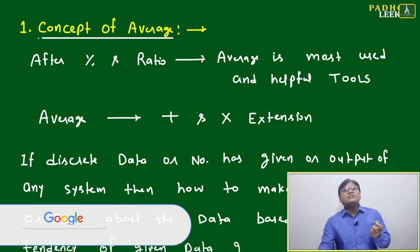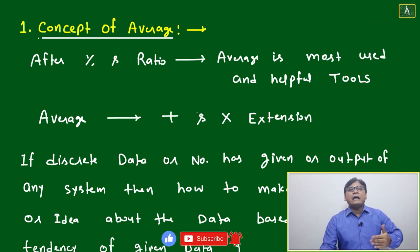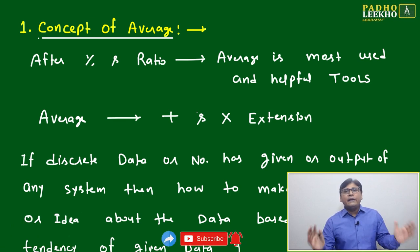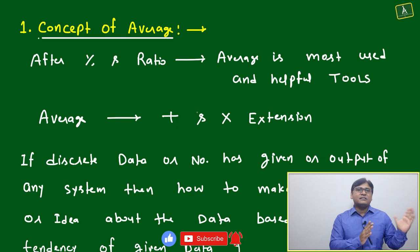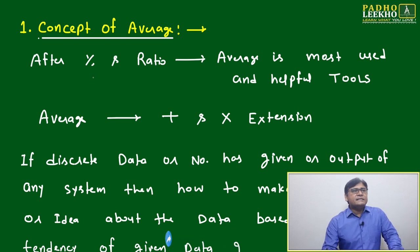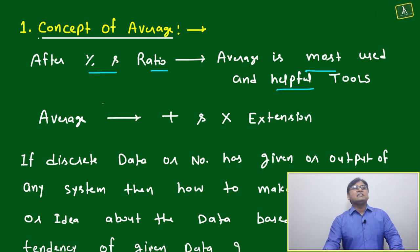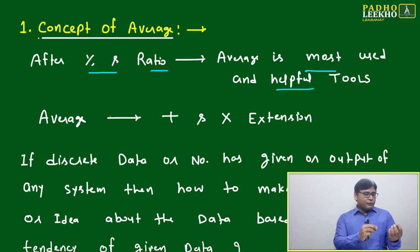The goal is to measure one central point or central line, based on that we will be able to evaluate full data in terms of average, either this side or this side. Average is a most powerful and helpful tool after percentage and ratio.